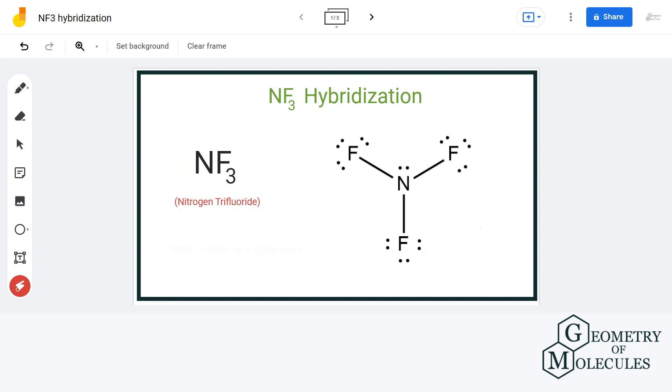Now, one of the easiest ways to find hybridization of any molecule is by counting the number of lone pairs of electron attached to the central atom and the number of sigma bonds it forms. This is known as steric number. In other words, steric number equals to the summation of sigma bonds and lone pairs attached to the central atom.